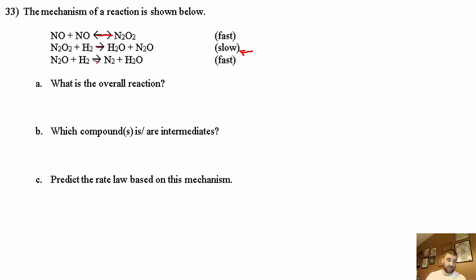N2O2 is made in the first step and used up in the second step, so that's an intermediate. In the second step N2O is made and then in the third step N2O is used. What are we left with? We're left with 2 NO plus 2 H2 giving us 2 H2O and N2.